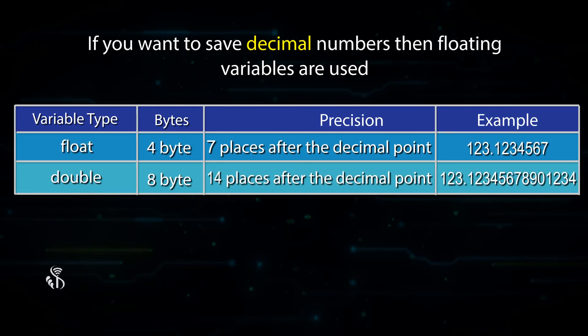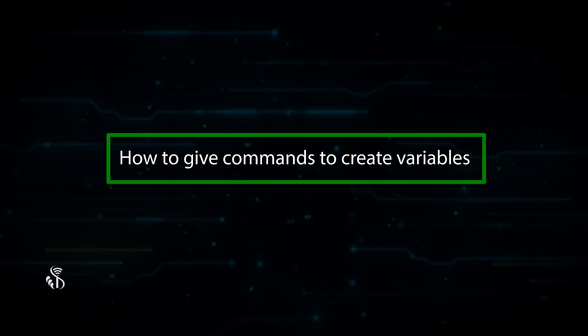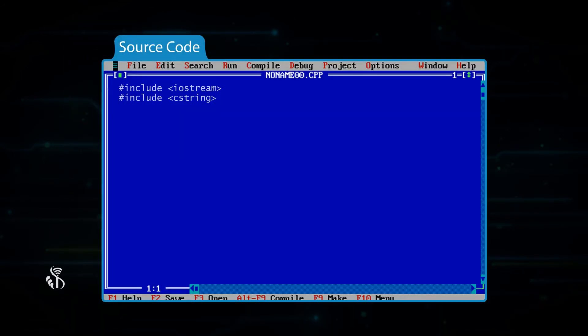Now, let's see a program which shows how to give commands to create variables. Int marks, semicolon, unsigned integer b, semicolon, float balance, semicolon.